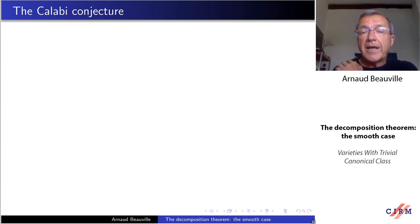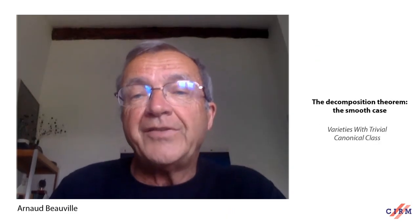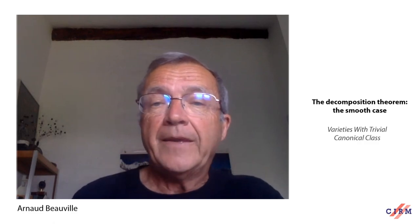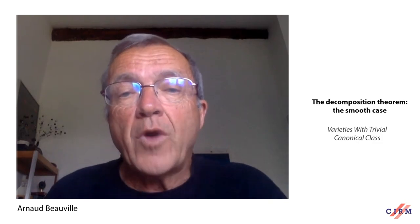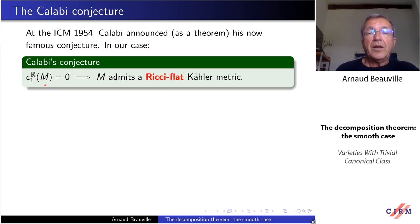It comes with a Calabi conjecture. This is 1954 at the International Congress in Amsterdam. Calabi announced his conjecture, which is now famous. In fact, he announced as a theorem, it's a very short announcement, half page. I will not describe the conjecture in general, it's a bit complicated. But in our case, the case of interest for us, we have varieties where the first Chern class is trivial in real cohomology. And the conclusion in that case is that M admits a Kähler metric, a special metric, which is Ricci-flat, meaning that Ricci curvature is zero. I will explain later what it means.